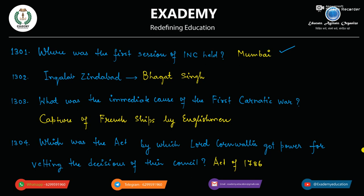What was the immediate cause of the first Carnatic war? Carnatic war ka sabse immediate cause kya tha? Capture of French ships by Englishmen.